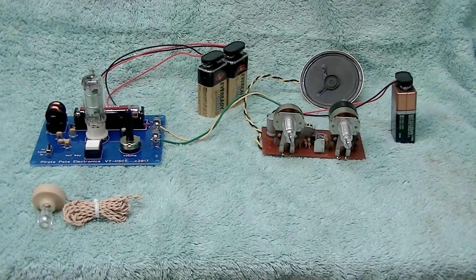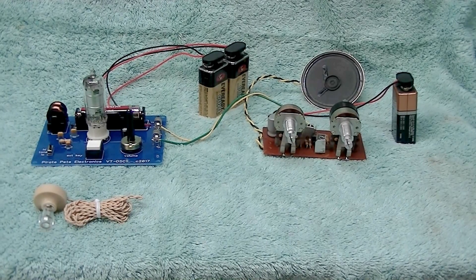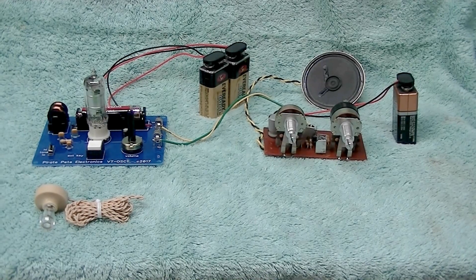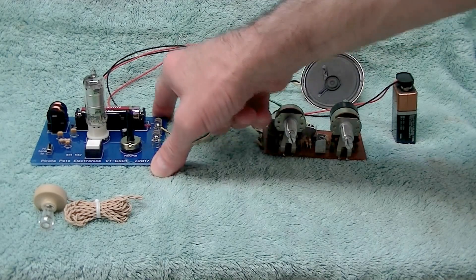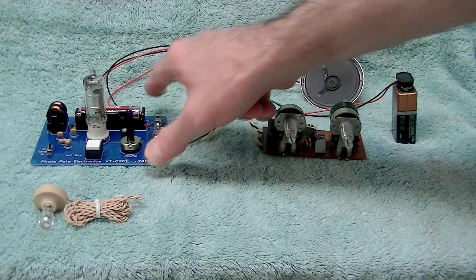Hello everybody, this is a video of one of our new printed circuit board electronic kits. In this case, we have our low voltage vacuum tube oscillator. This is kind of a unique project in that we're using a miniature tube originally developed for battery powered radios.